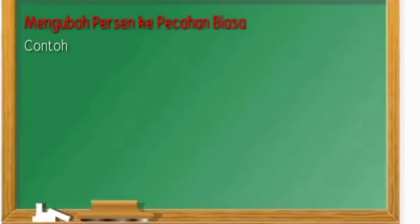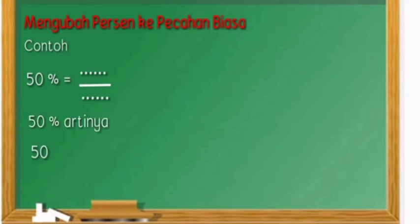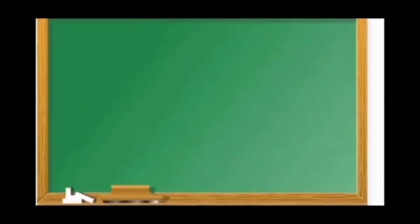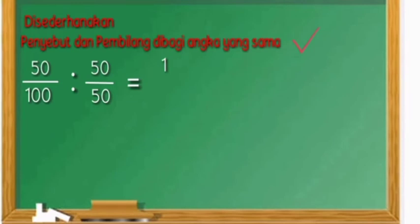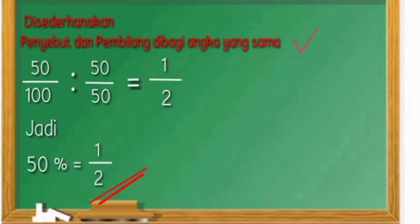Selanjutnya, mengubah persen ke pecahan biasa. Contoh: lima puluh persen sama dengan berapa pecahannya? Lima puluh persen artinya lima puluh per seratus. Disederhanakan, penyebut dan pembilang dibagi angka yang sama. Lima puluh per seratus dibagi lima puluh per lima puluh. Sama dengan lima puluh bagi lima puluh sama dengan satu, seratus bagi lima puluh sama dengan dua. Jadi, satu per dua.